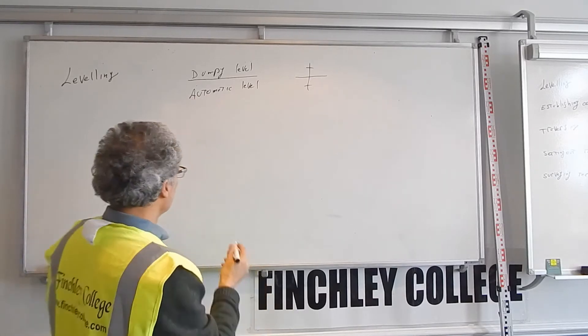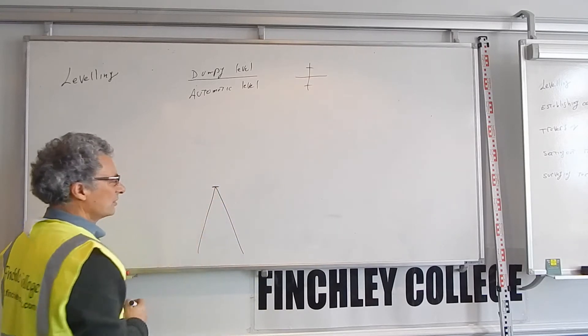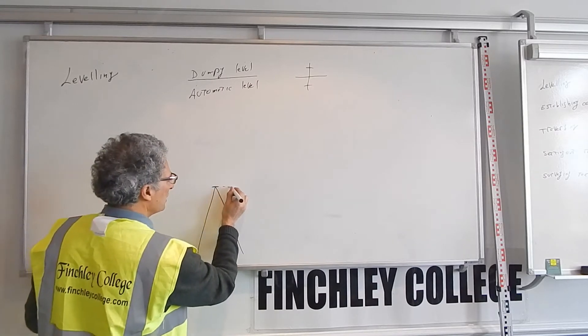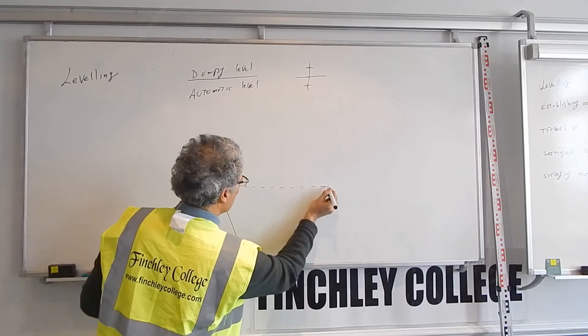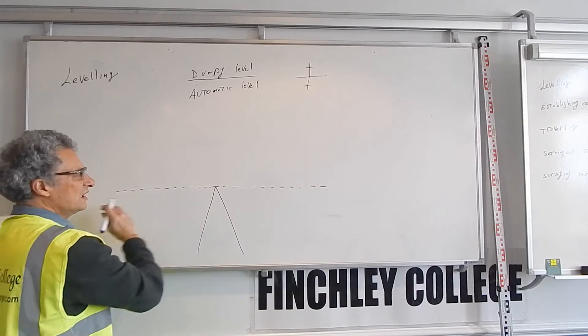What is the job of a level? The instrument is set up on a tripod and its function is to stay level. As you turn it around 180 degrees, 360 degrees, it will stay level.